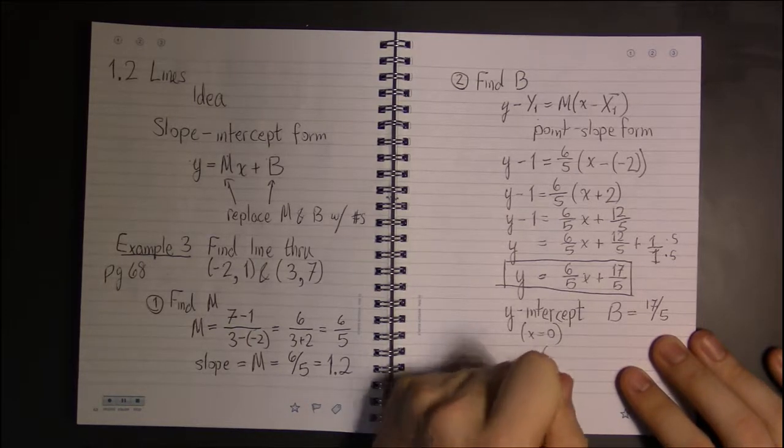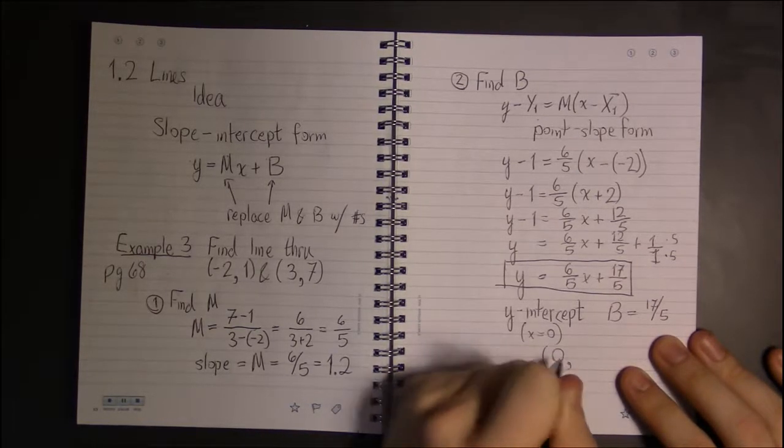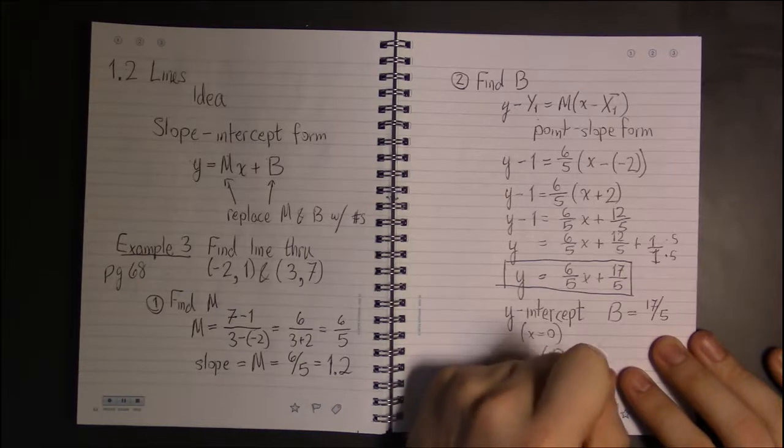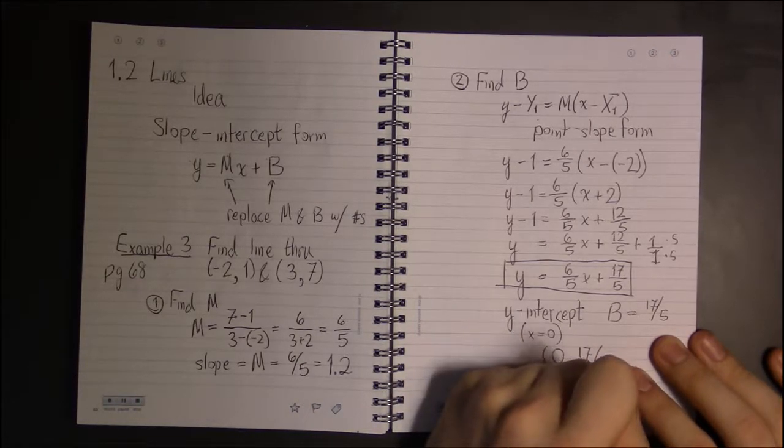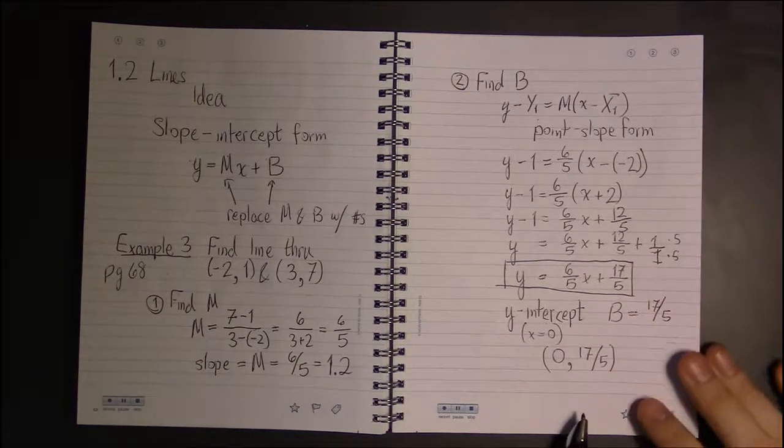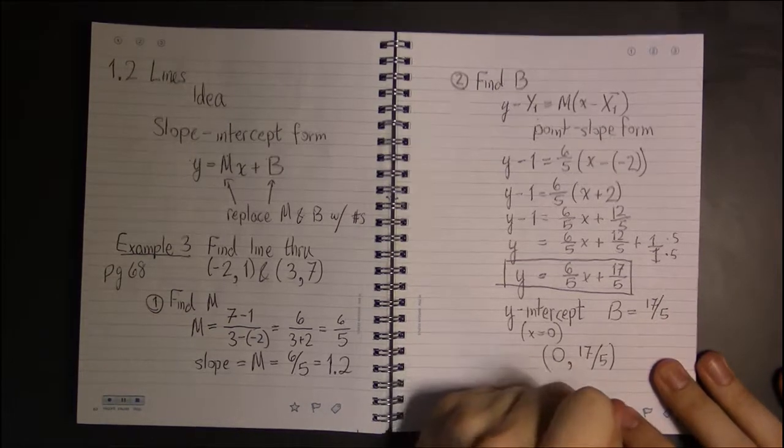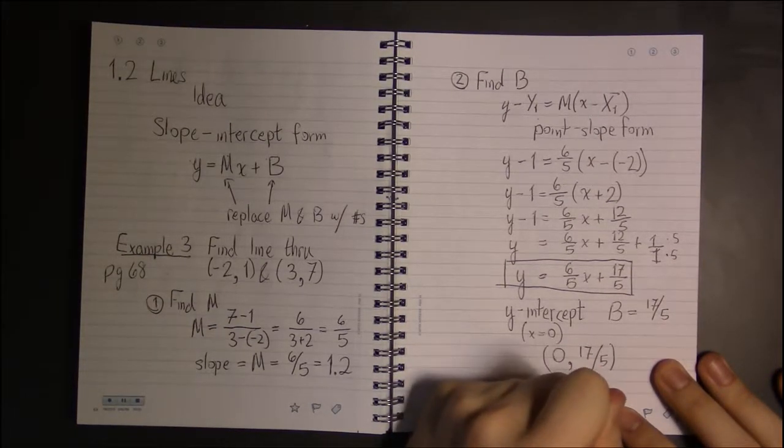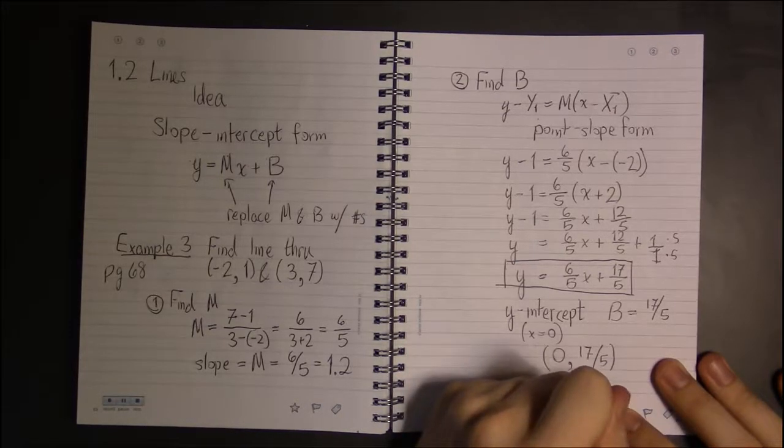So, the line has to run through the point (0, 17/5). Or, if you prefer, that is 3 and 2/5, which is 4.